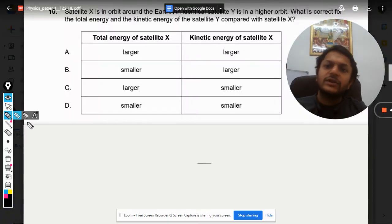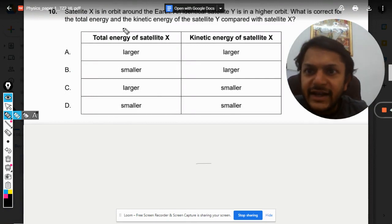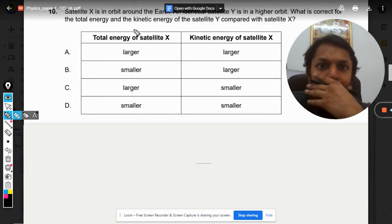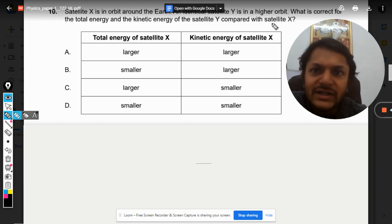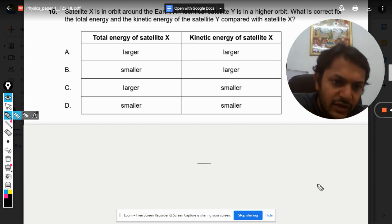Okay, dear students, let us see what is there in this question. Satellite X is in orbit around Earth and an identical satellite Y is in a higher orbit. What is correct for the total energy and the kinetic energy of satellite Y compared with X? So, as per the diagram is concerned...